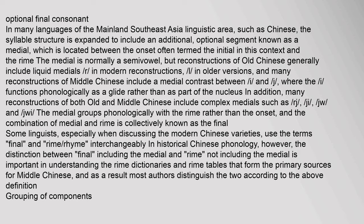Many reconstructions of Middle Chinese include a medial contrast between i and j, where i functions phonologically as a glide rather than as part of the nucleus. Many reconstructions of both Old and Middle Chinese include complex medials. The medial groups phonologically with the rhyme rather than the onset, and the combination of medial and rhyme is known as the final. In historical Chinese phonology, the distinction between final (including the medial) and rhyme (not including the medial) is important in understanding the rhyme dictionaries and tables that form the primary sources for Middle Chinese.